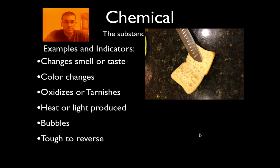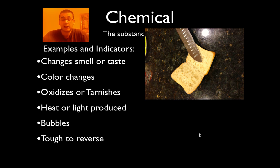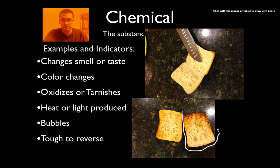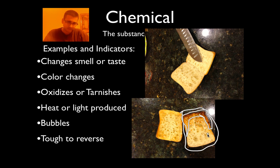We also have the tough-to-reverse category. Here's some bread I had for dinner. I cut it — cutting is kind of like ripping, which is a physical change. But what I did to the bread was a chemical change: I toasted it. We have a new substance here, especially along these edges where it's brown and golden yellow. It's tough to reverse; we can never get this back.